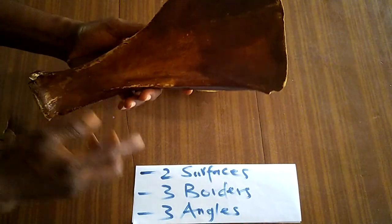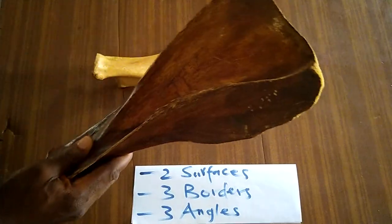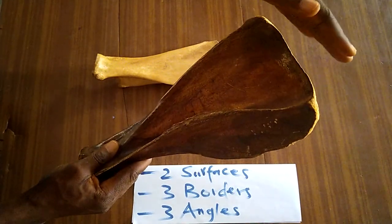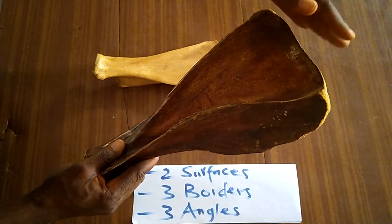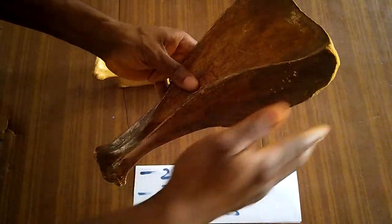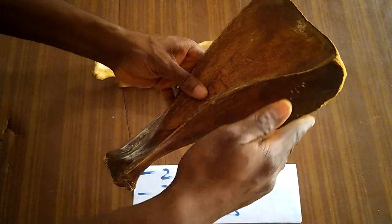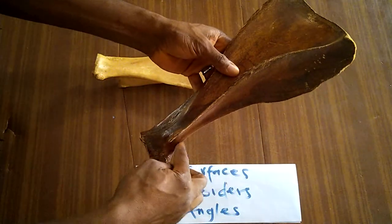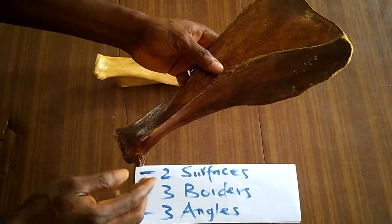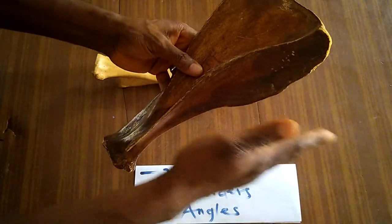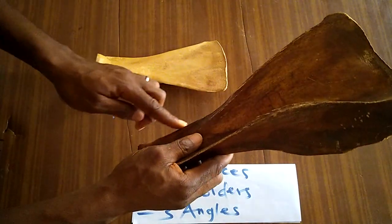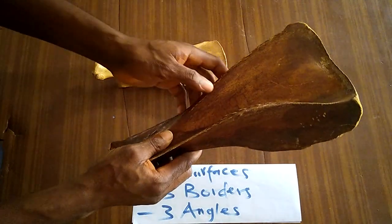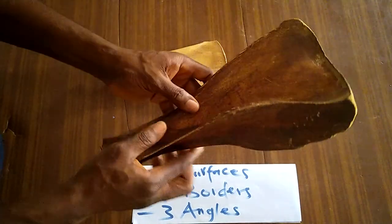The three borders of the scapula are: the dorsal or vertebral border, which is in close apposition with the vertebral column; the cranial border, which is convex dorsally and becomes slightly concave ventrally; and the caudal border, which faces caudally and is slightly concave.